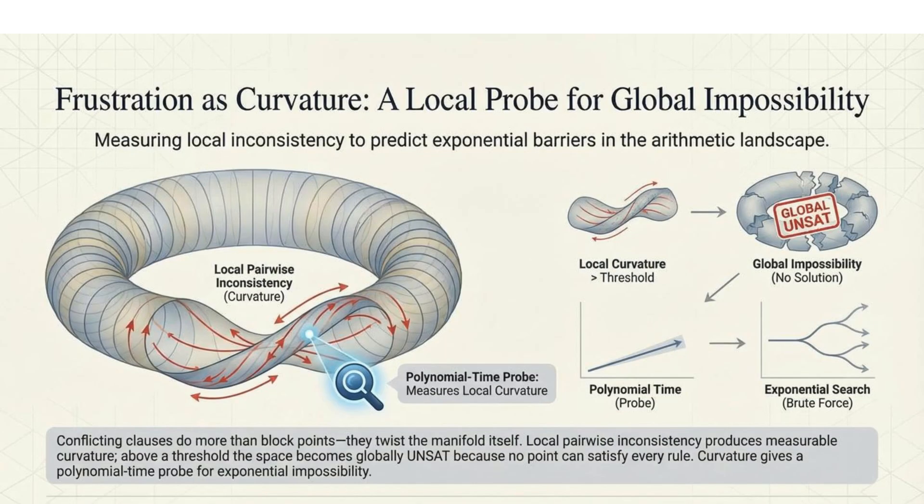We explore frustration as curvature — a local probe for global impossibility. Local pairwise inconsistency creates measurable curvature. If this curvature exceeds a threshold, the space becomes globally unsolvable. Curvature offers a polynomial time probe for exponential impossibility.